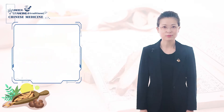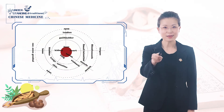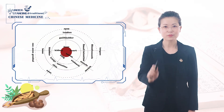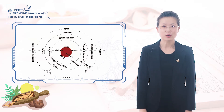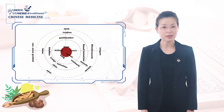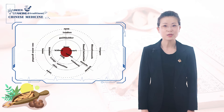Hello, nice to see you again. From today's class, we will learn different zhang organs and their main physiological functions. So look at this figure. In the center, there are 5 zhang organs, which are heart, spleen, lung, kidney, and liver.